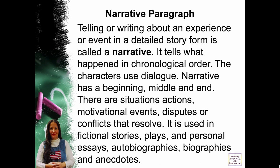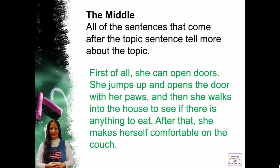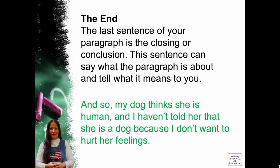A paragraph is like a mini story with a beginning, middle, and end. The beginning — the first sentence, called the topic sentence, tells what the paragraph is about. Example: 'My dog thinks she is a human.' The middle — all sentences that come after the topic sentence tell more about the topic: 'First of all, she can open doors. She jumps up and opens the door with her paws, and then she walks into the house to see if there is anything to eat. After that, she makes herself comfortable on the couch.' This goes in chronological order — it's an example of a narrative. The end — the closing: 'And so my dog thinks she is human, and I haven't told her that she is a dog because I don't want to hurt her feelings.'